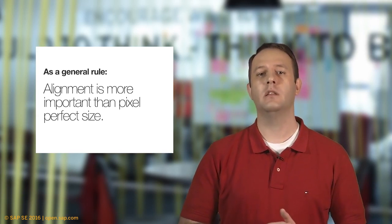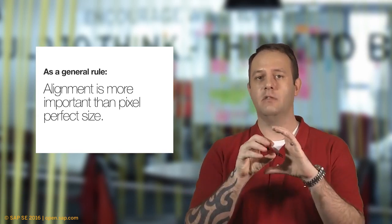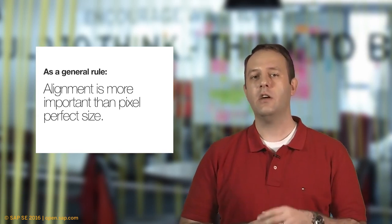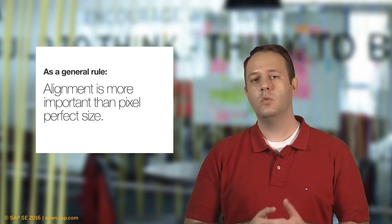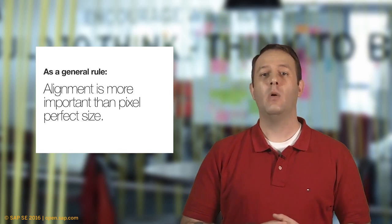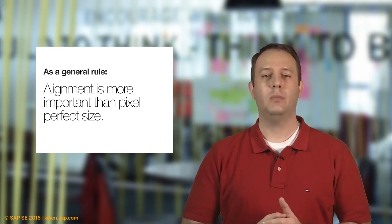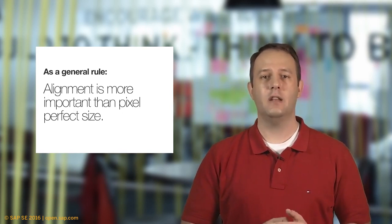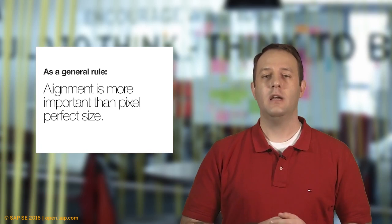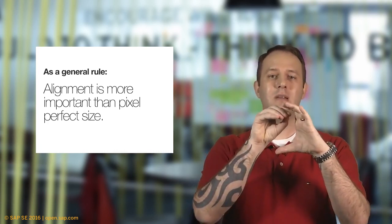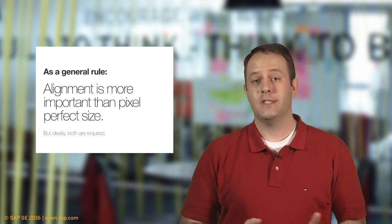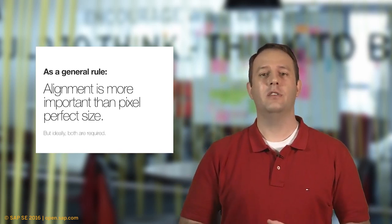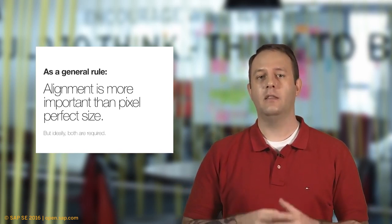As a general rule, alignment of an object is more important than its pixel-perfect size. For example, if a button has an icon inside and that icon is 10 pixels rather than 12 pixels big, most designers wouldn't complain. However, they will more likely raise an issue if the icon is misaligned within the button itself. Of course, ideally, both a perfect alignment and a correct pixel size would be preferred.